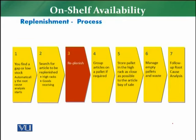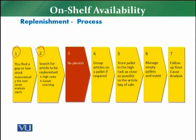There are seven steps to the replenishment process. Step one: you find a gap or low stock, and automatically the root cause analysis starts — you identify whether the reason was the order, the delivery, or the display of the product. Step two: you search for the article to be replenished — is this article available in the warehouse or on the hyrax? Step three: you replenish immediately.